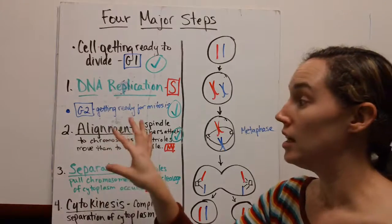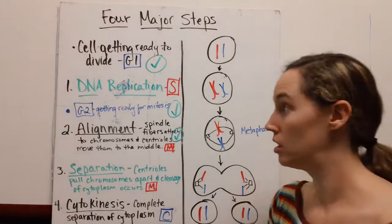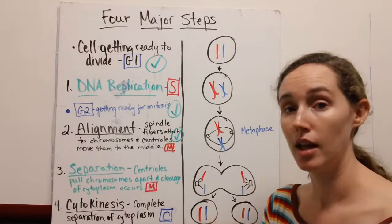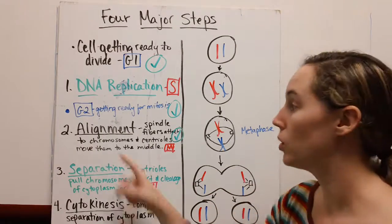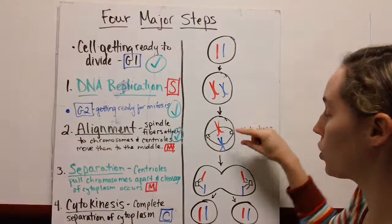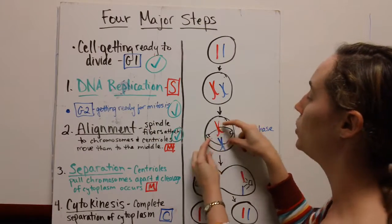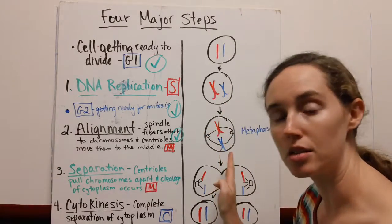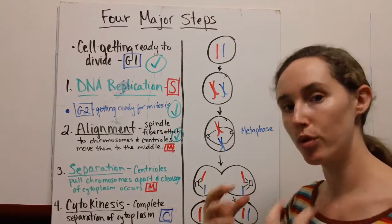Our other two big steps that are part of mitosis are alignment and separation. In alignment, this is when our spindle fibers are going to attach to our chromosomes and move them to the middle, so they're lined up down the middle of the cell.